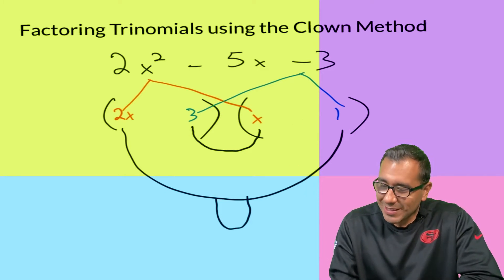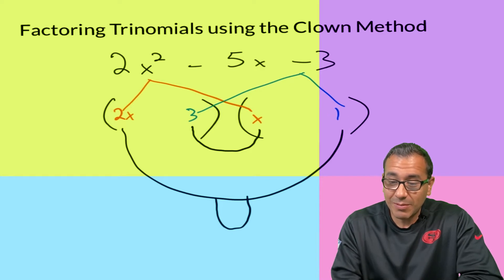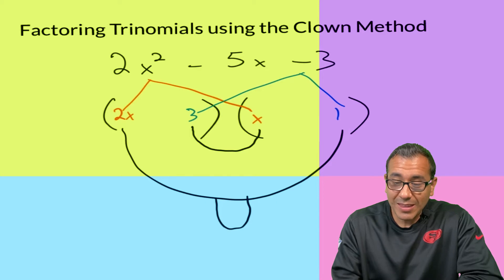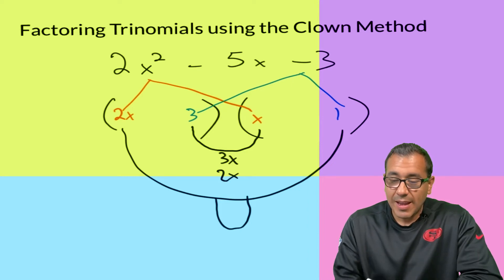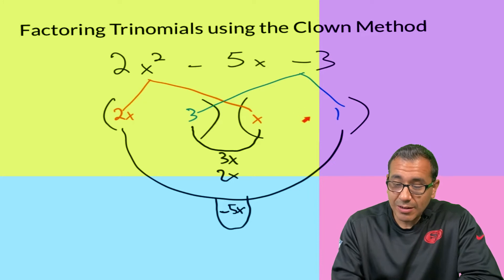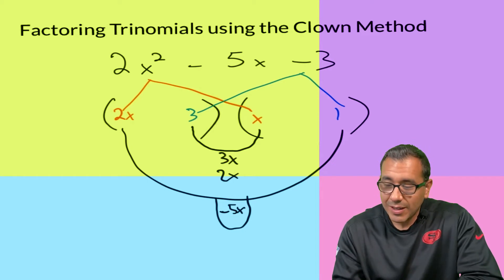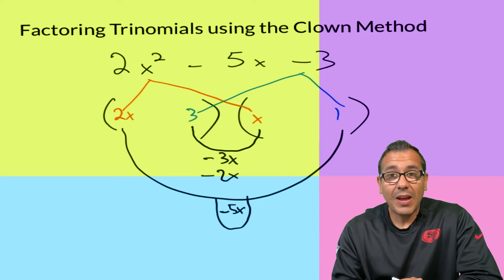These two factors multiply to give 2x², and these two multiply to give negative 3. We want whatever we get from those cross-products to add up to negative 5x. So: 3 times x gives 3x, and 2x times 1 gives 2x. The big question is: can we assign signs to get negative 5x?